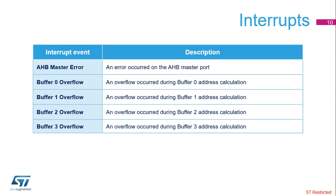The Chrome GRC manages five interrupt sources: AHB master error, when an error occurred during an AHB transaction to the physical memory, and four buffer overflows, one per buffer, when an overflow occurs during the offset calculation of a buffer.